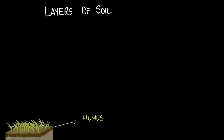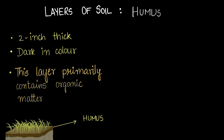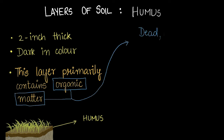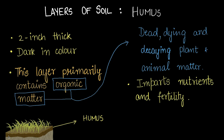The first layer is called humus. It's about two inches thick, dark in color, and made up of organic matter. Organic matter basically means dead, decaying plant and animal matter. This layer imparts nutrients and fertility to the soil.